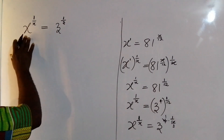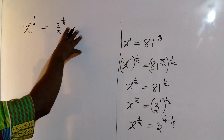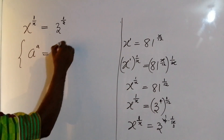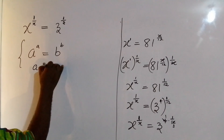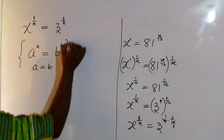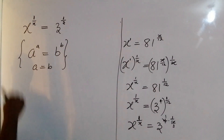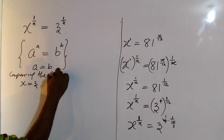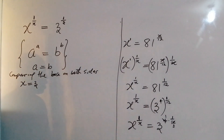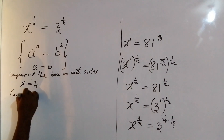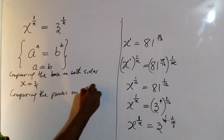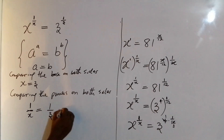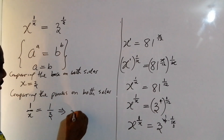At the end of the day, you will see that the left hand side is looking similar to the right hand side. I am going to apply the law: if a to the power of a equals b to the power of b, then a equals b — bases are equal, powers are equal. Comparing the base on both sides gives x equal to 3. And comparing the powers on both sides, 1 over x equals 1 over 3, which also means x equal to 3.